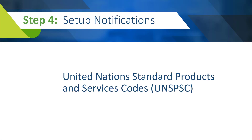In Step 4, you will set up your notifications for bid solicitations. Here, you select the United Nations Standard Product and Services Codes, or UNSPSCs, that describe the bid solicitations you want to receive notifications about. The UNSPSCs you enter here are only for email notifications and are not part of your public searchable business profile. For more information about UNSPSCs and their role in your business profile, click the link in the description of this video.